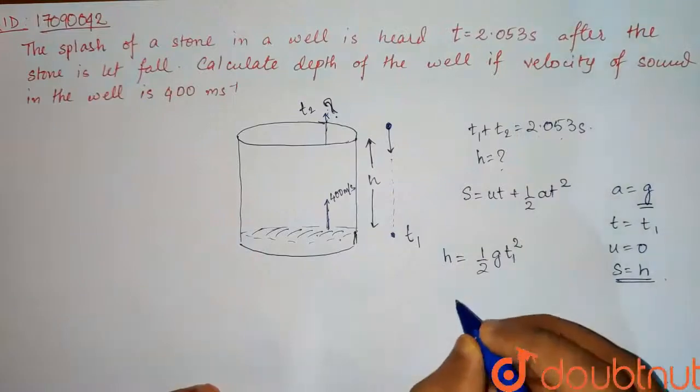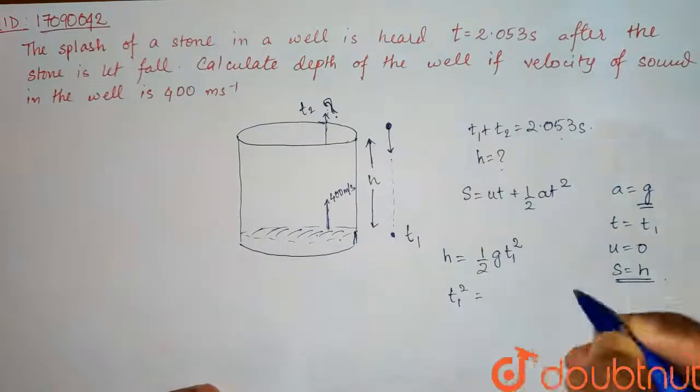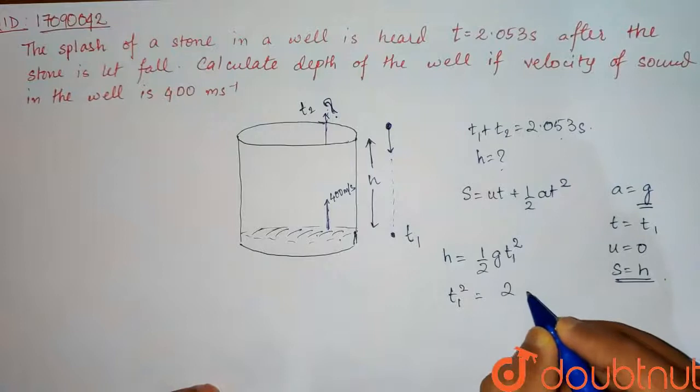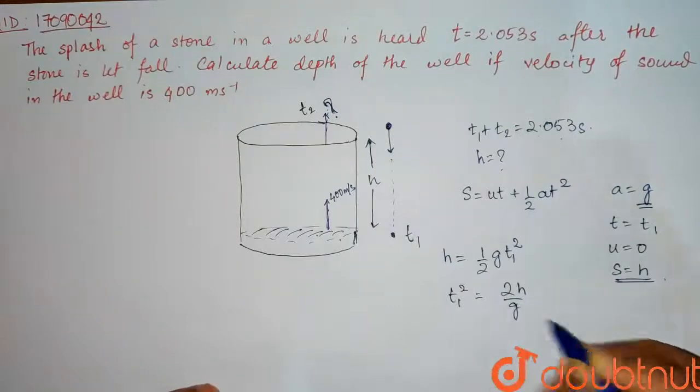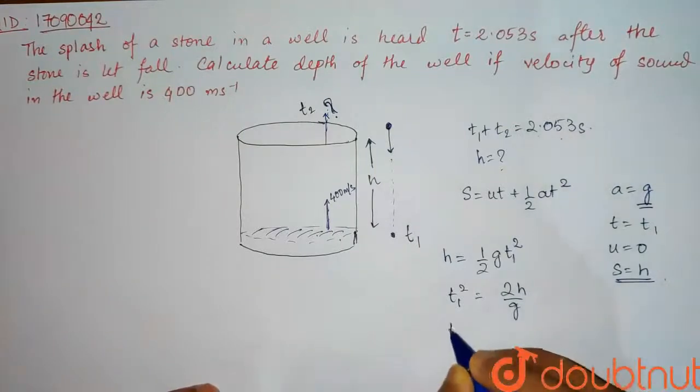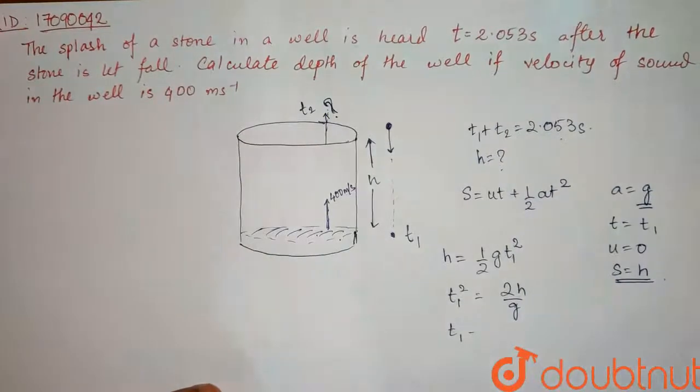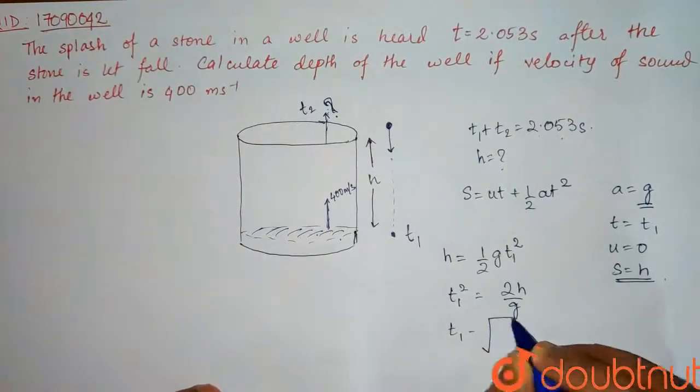Which we can say t1 square is equal to 2H by g, and t1 is equal to root over 2H by g.